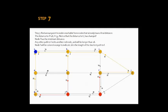Step 7: Red arrows point to nodes reachable from nodes that already have a final distance. The distance to F is equal to 26, and H is equal to 33. Notice that the distance to H has changed. Node F has the minimum distance, which is 26. Any other path to F visits another red node and will be longer than 26. Node F will be colored orange to indicate that 26 is the length of the shortest path to F.